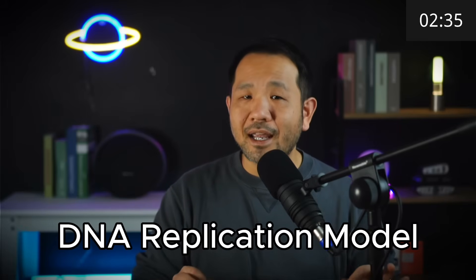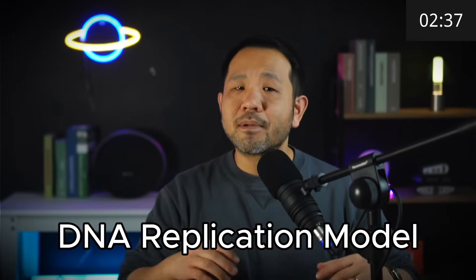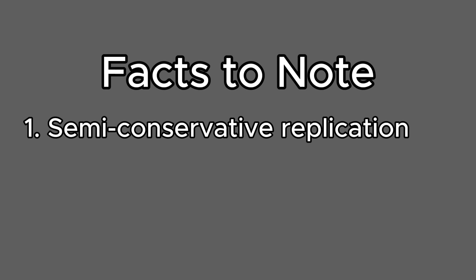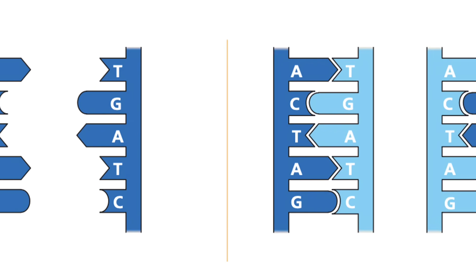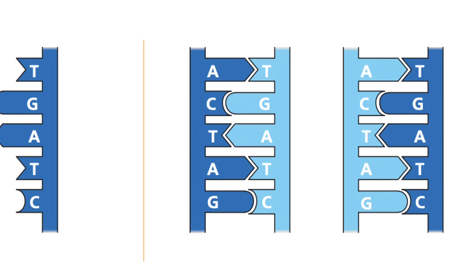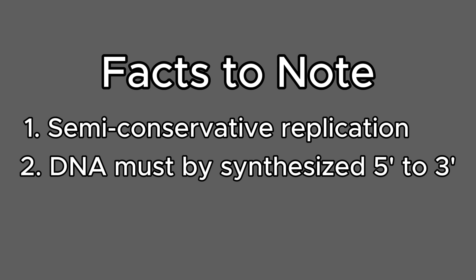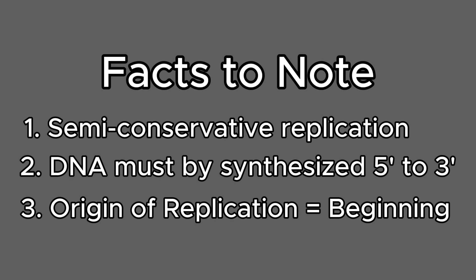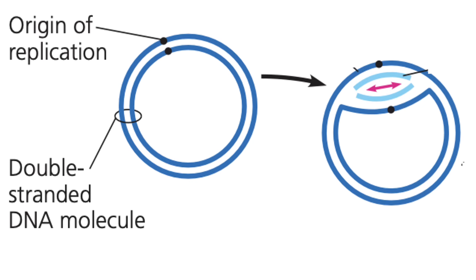What's more important to note from this chapter is the replication of DNA. Let's put some facts on the table before we review that process. One, DNA replicates through a semi-conservative replication mechanism, meaning that each of the DNA strands in the double helix acts as a template to create its complementary strand. Two, DNA must be synthesized from a 5' to 3' prime direction. Three, the origin of replication serves as the start point for the DNA replication machinery to mobilize and execute the replication process.